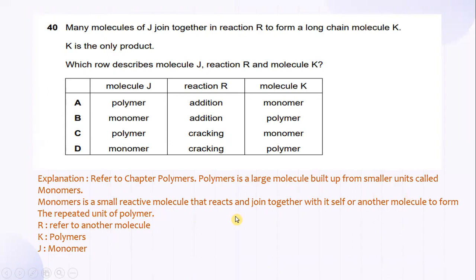So, in this case, J refers to monomers, R refers to another molecule which is addition, and K is actually polymer. So, the answer for this is B.